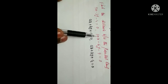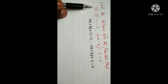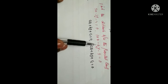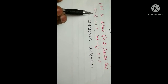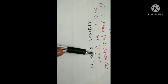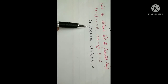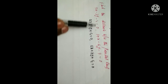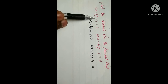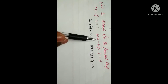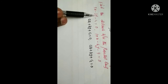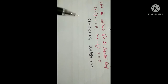The parallel lines condition: for lines ax plus by plus c₁ equal to 0 and ax plus by plus c₂ equal to 0, the x-coefficients and y-coefficients must be the same while constants are different. Here the x-coefficient is 5 and 10 — these are different — and the y-coefficient is minus 3 and minus 6. So we convert the first line to match the second line. The solution starts.